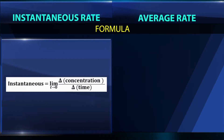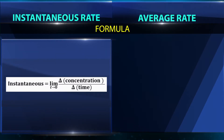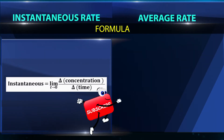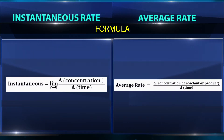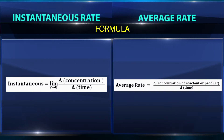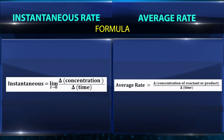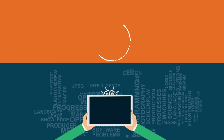Instantaneous Rate is equal to the limit as T tends to zero of delta concentration divided by delta T. Average Rate is equal to delta concentration of reactant or product divided by delta time.